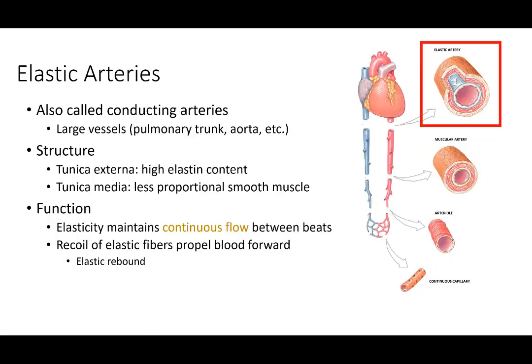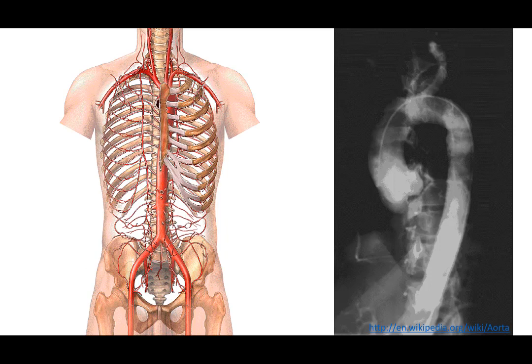Elastic arteries are the large arteries closest to the heart that can handle great surges of pressure. When the heart ejects blood out the aorta, it causes distension of the wall. There's a lot of elastic components within it, allowing it to distend out so that between beats — when the heart is resting — the recoil of the walls back inward maintains forward flow.